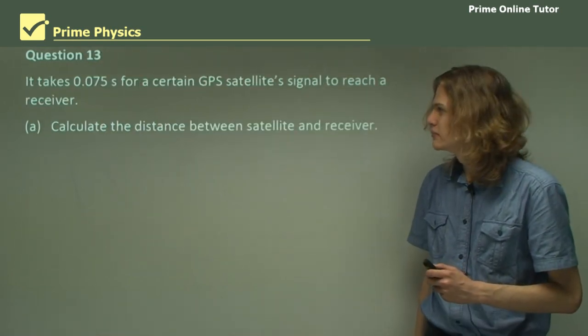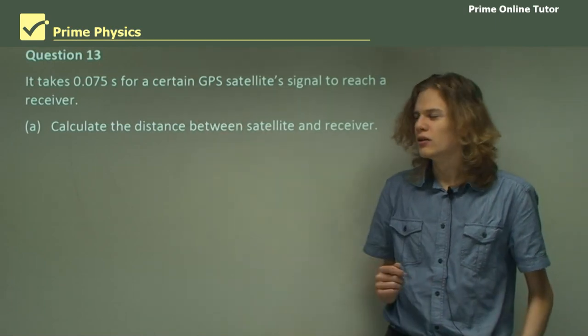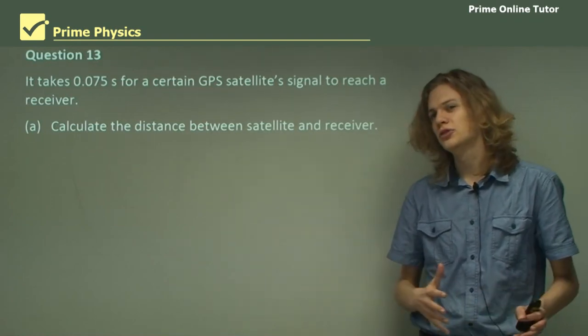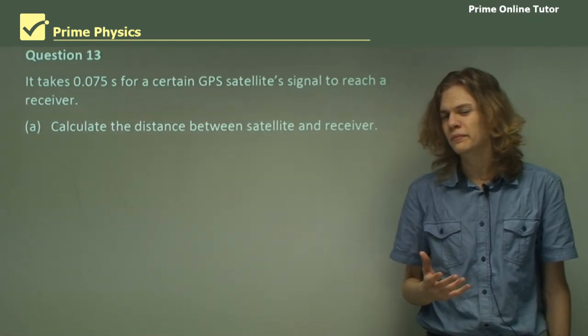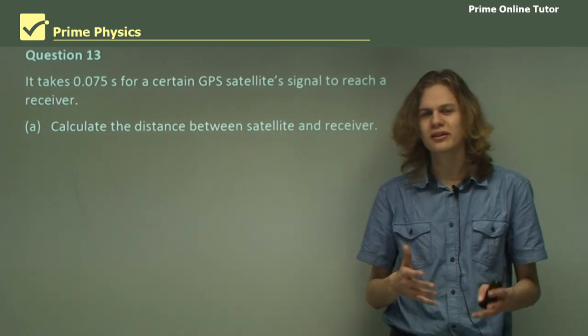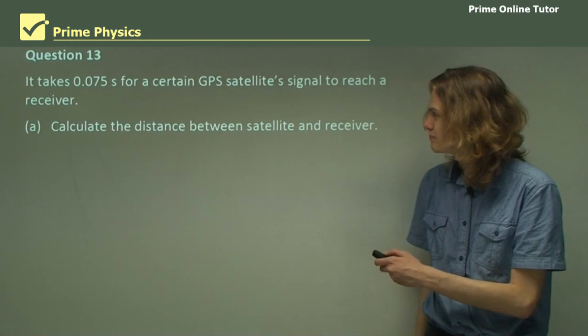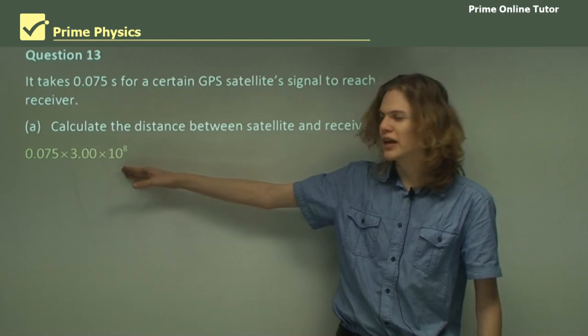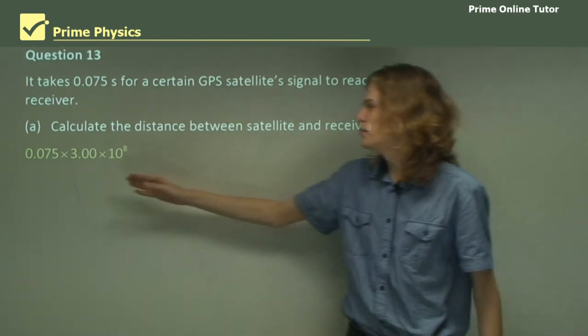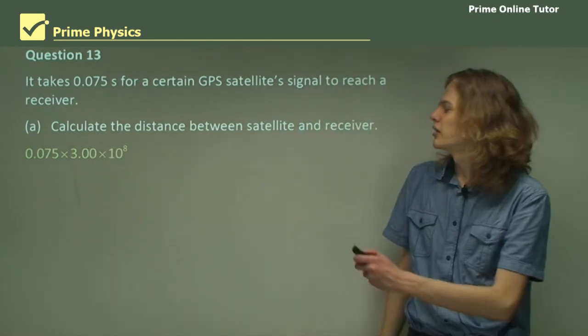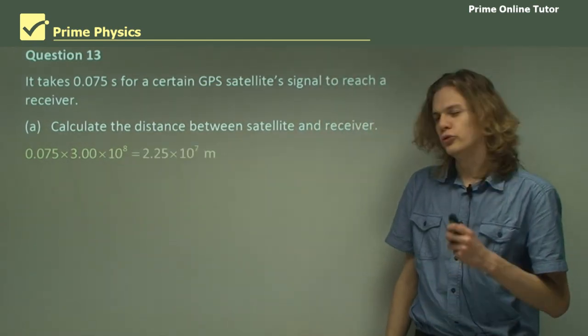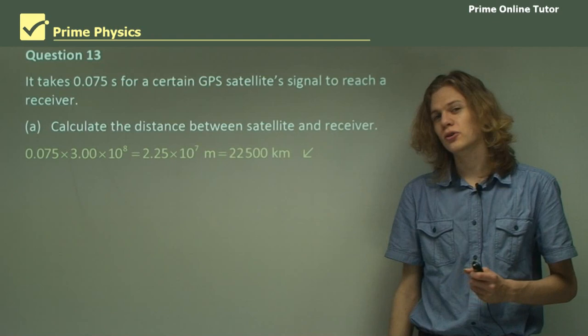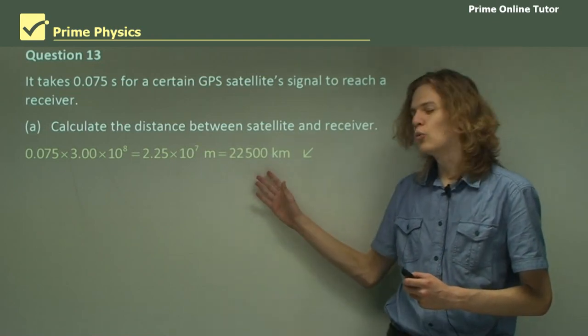Question 13. It takes a very small amount of time for a certain GPS satellite signal to reach its receiver. Calculate the distance between the satellite and receiver. Can you remember how we do this? It's simply distance equals speed times time. So we have a speed, 3 times 10 to the 8, the speed of light, times time, 0.075 seconds, to end up with an answer of 2.25 times 10 to the 7 meters, or 22,500 kilometers. So this is how far away the satellite is.